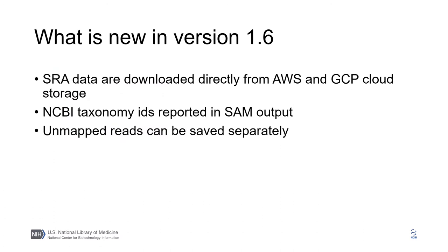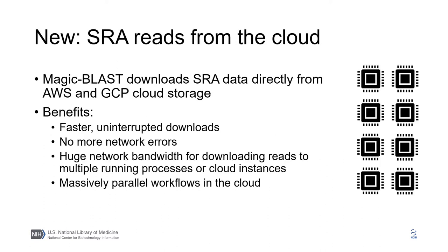I will now present improvements in version 1.6. The new version of MAGIC BLAST downloads SRA data directly from cloud storage. This means faster, uninterrupted downloads. When using the cloud, you can take advantage of huge network bandwidth and download reads into hundreds of simultaneously running processes or instances.